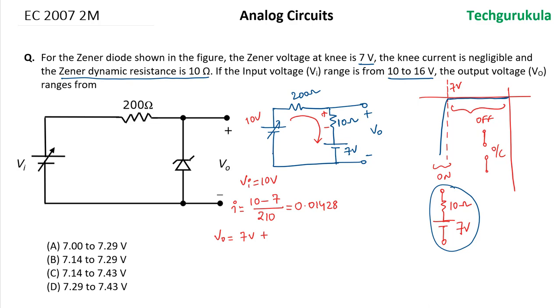This is I times Rz. I is in fact found here. This is for Vi equal to 10 volts.